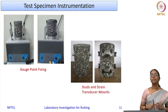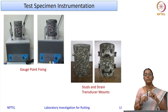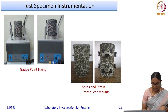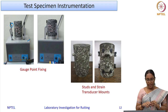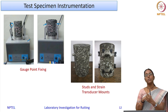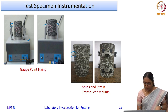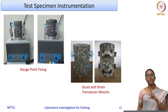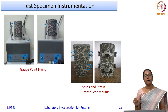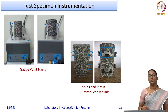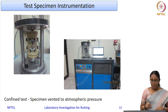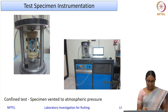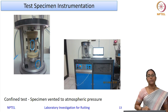LVDTs are fixed onto the specimen using studs glued to the surface. An apparatus holds three sets of studs; glue is applied and all six studs are attached to the specimen. For each of the three LVDTs there is a top transducer mount and a bottom transducer mount. The LVDT rod connects the two mounts, and deformation data is transmitted to the data acquisition system.